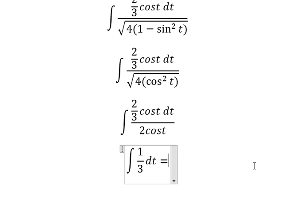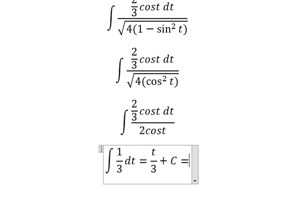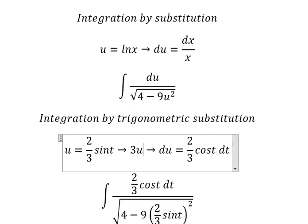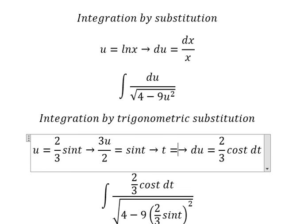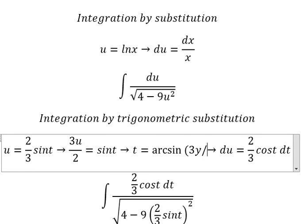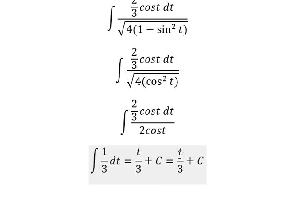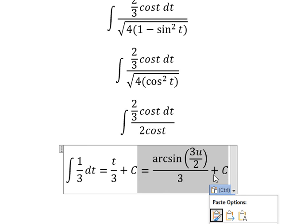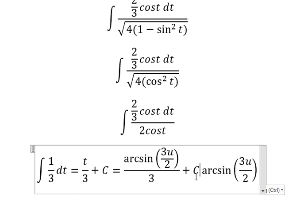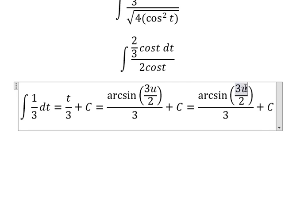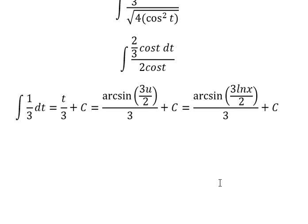The integration gives us t over 3, and I will add the constant c. About t — I will divide both sides by 2 over 3, and now we have t equal to arcsin of 3u over 2. I will substitute this back to change t in terms of u, where u equals ln(x). And here is the final answer. Thank you for watching.